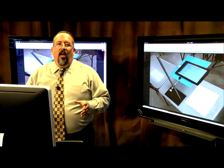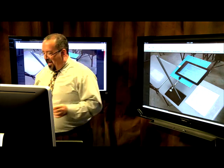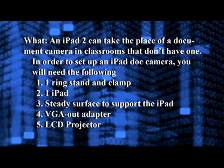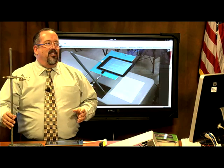Let's look at the parts you're going to need. The first part is a ring stand and a clamp. Most teachers have no idea what a ring stand is unless you're a science teacher. This is what a ring stand looks like — it's a common piece of equipment in science classrooms all over the district, especially in middle school and high school. If you know a chemistry or physics teacher, they've got tons of these.